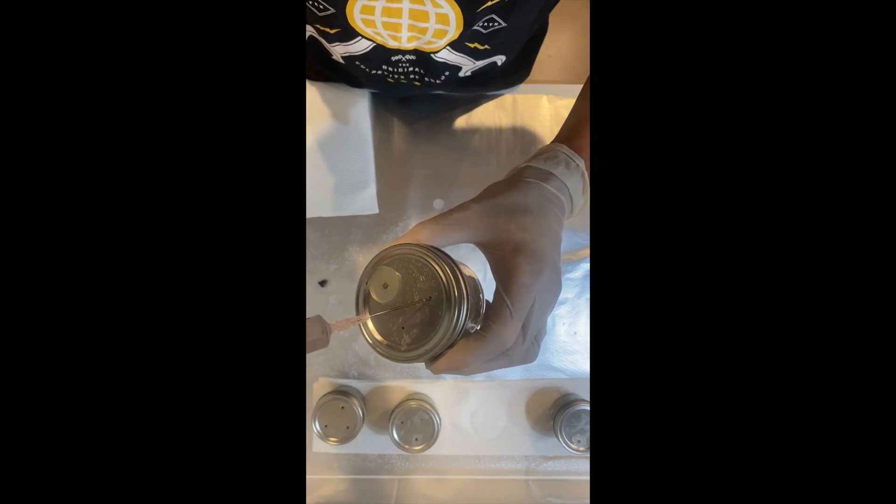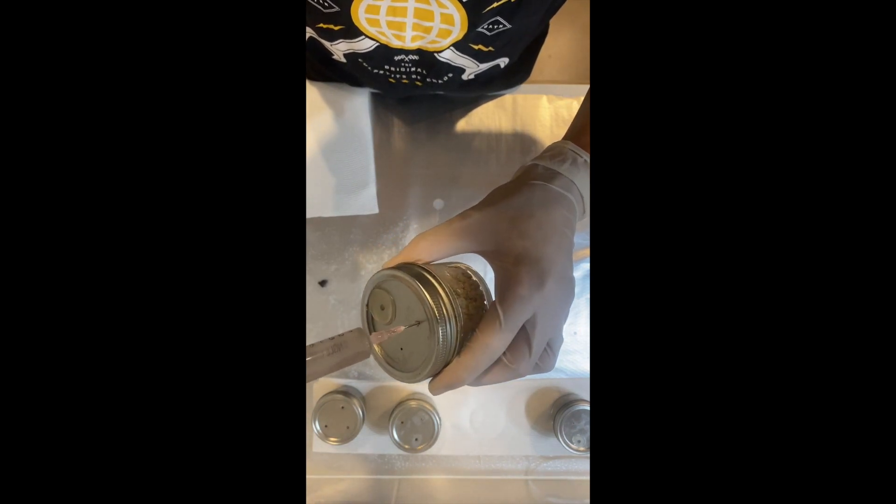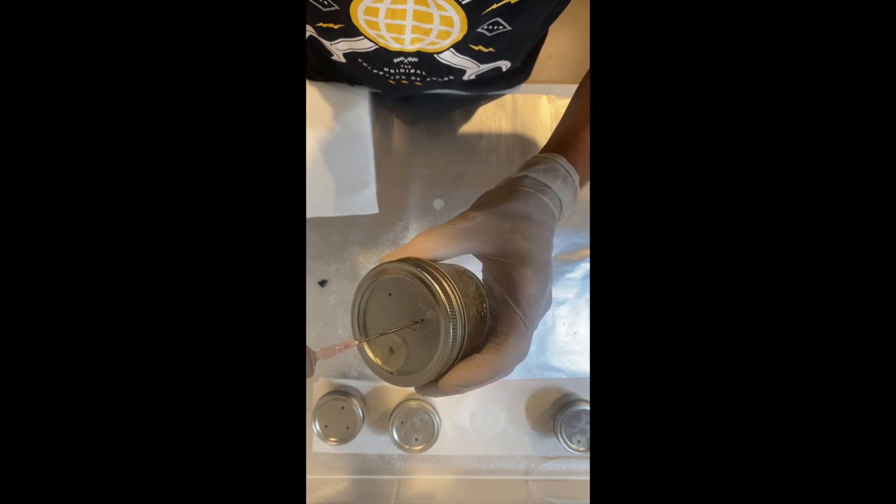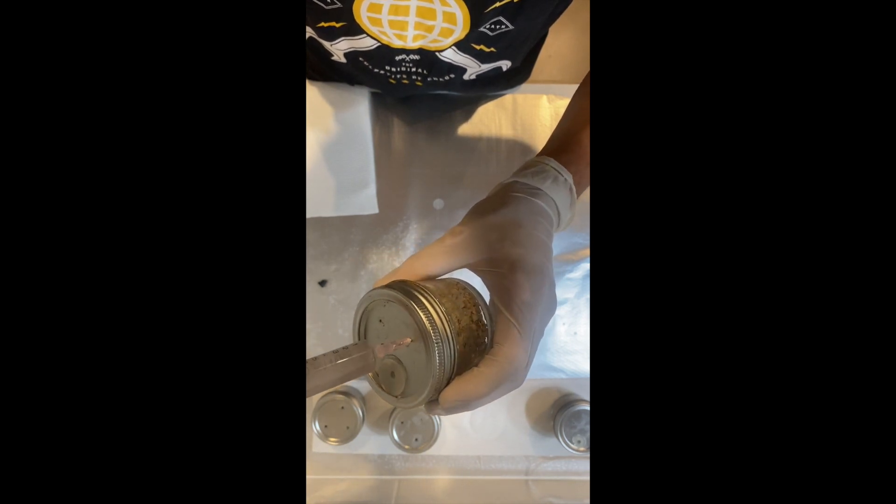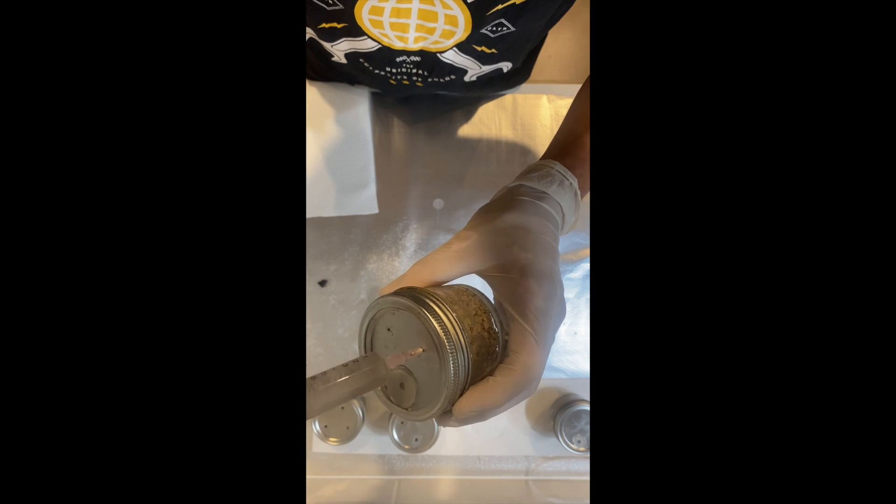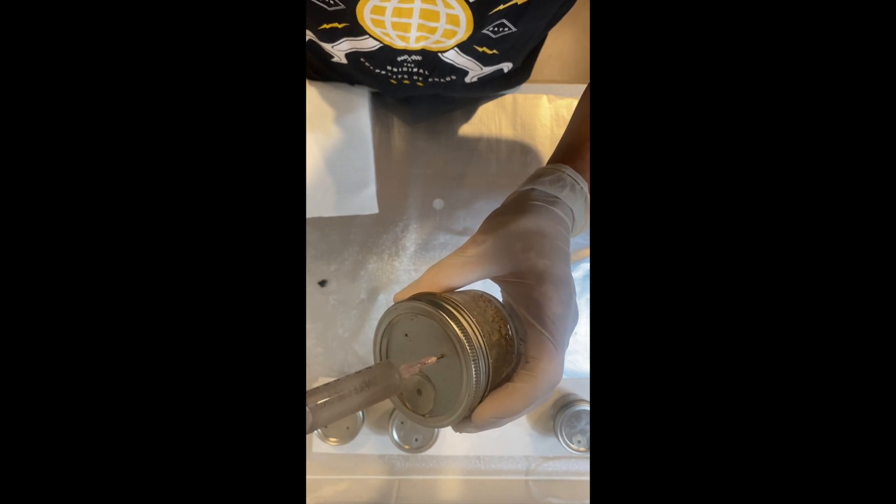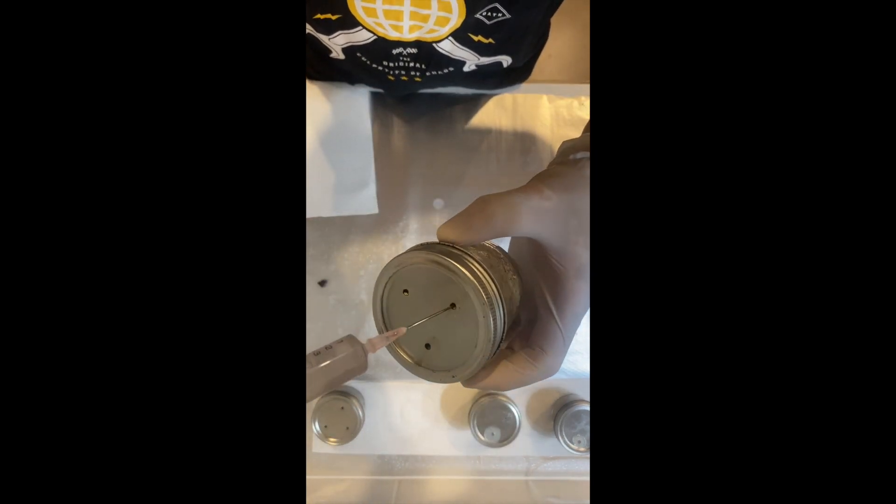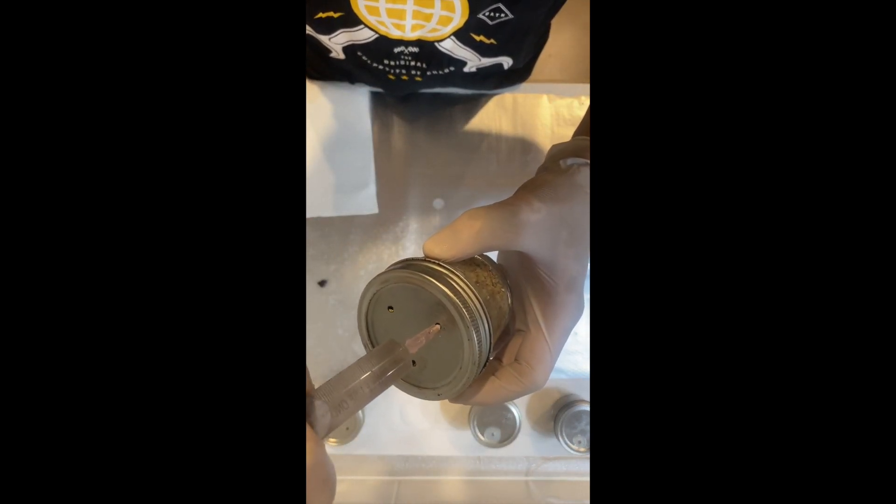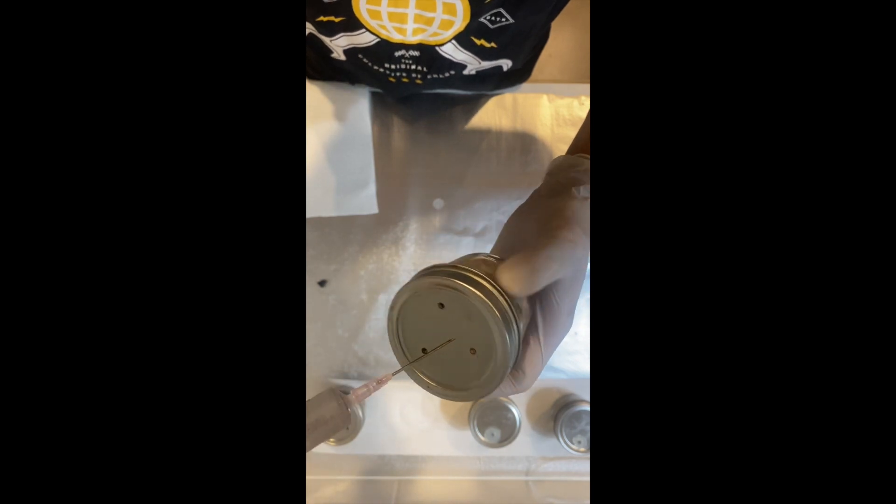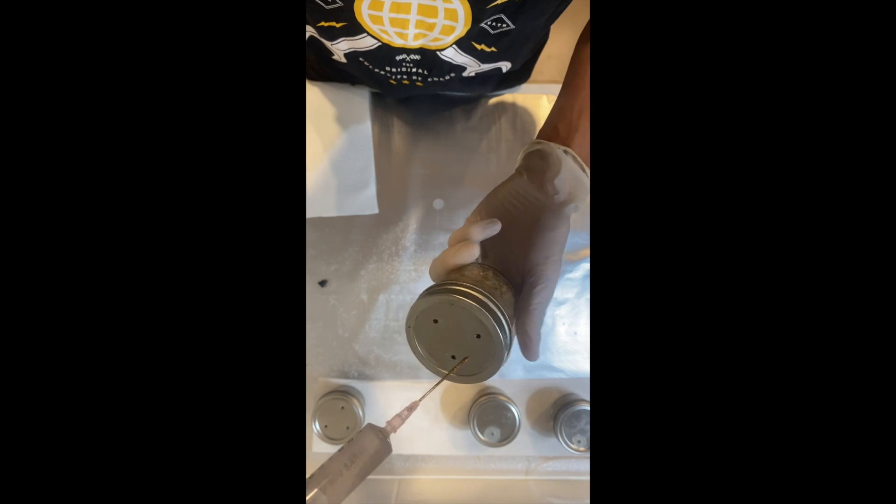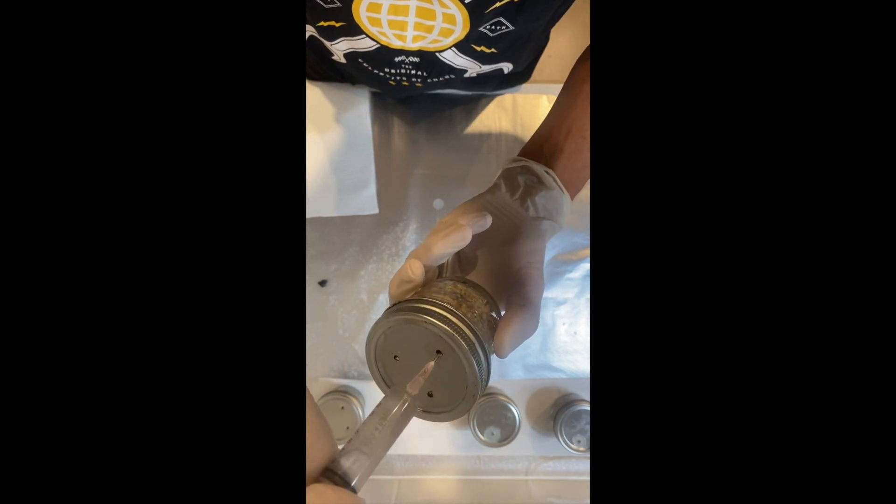I'm going to do the same to the rest of these jars, ideally sterilizing the top with alcohol each time you do it. But once again, this is the way I do it. I've never got a problem. This one has three holes, so we're going to do three: one, two, and three.